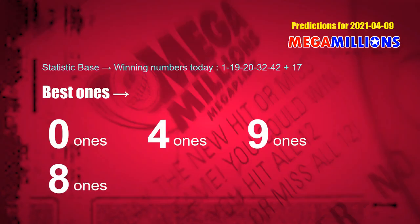According to the statistics above, with white balls 01, 19, 20, 32, 42 drawn today, the frequent following units digits are: zero ones, zero ones, four ones, four ones, nine ones, eight ones.